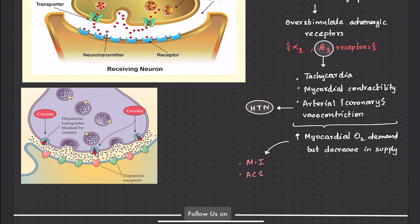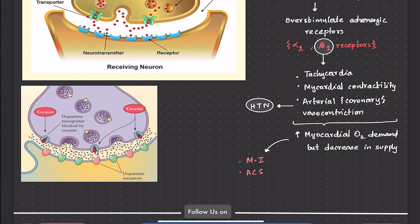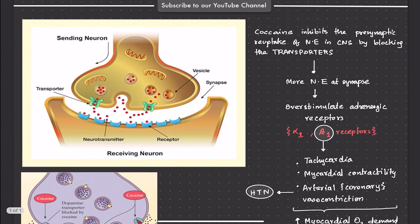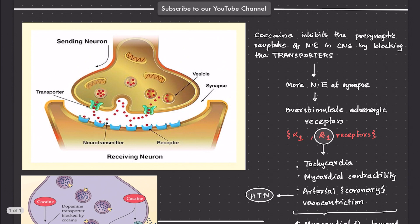All these features increase myocardial oxygen demand. However, because of arterial vasoconstriction, oxygen supply is simultaneously decreased. This demand-supply mismatch leads to acute coronary syndrome, angina, and eventually ischemia and myocardial infarction — which is what happens in cocaine users.